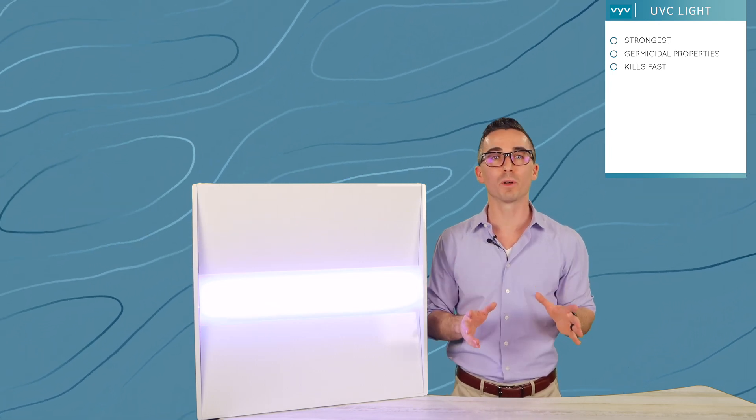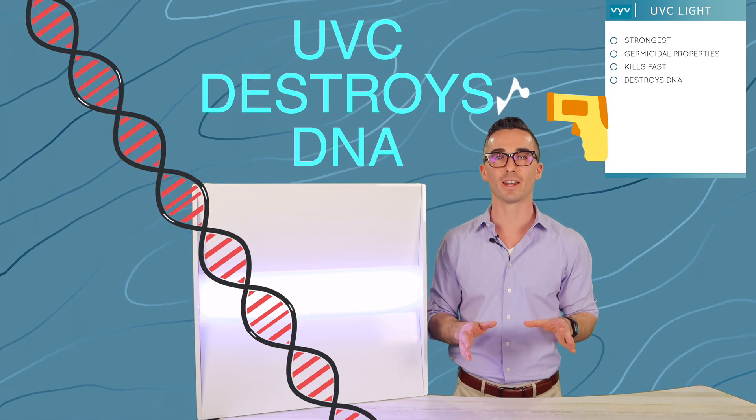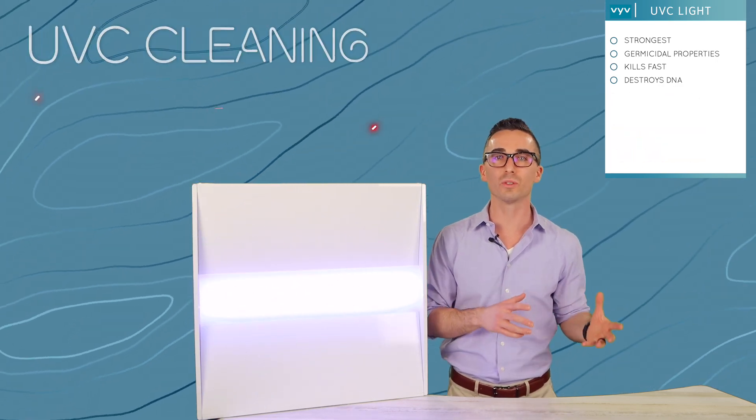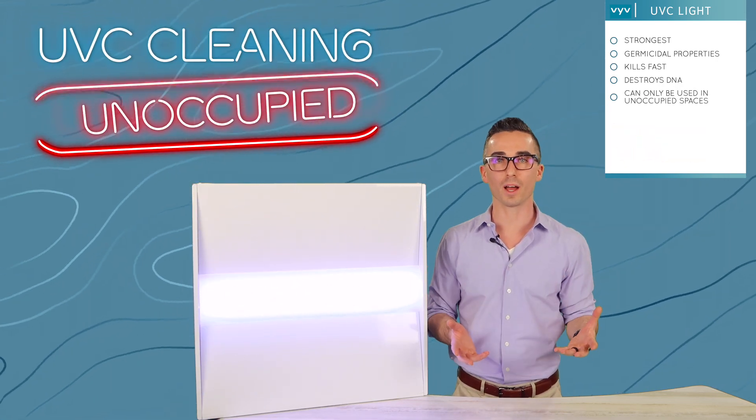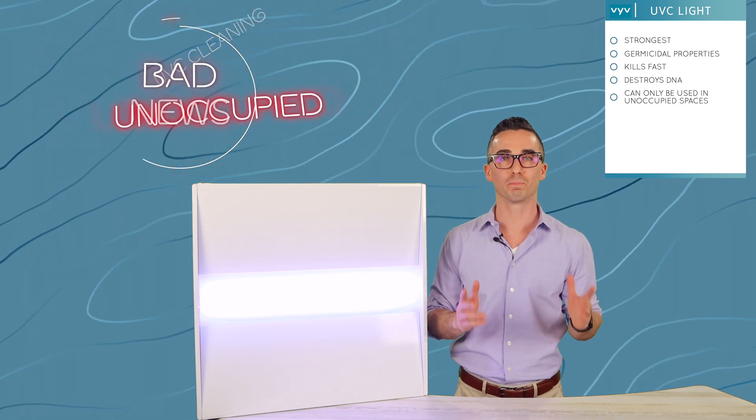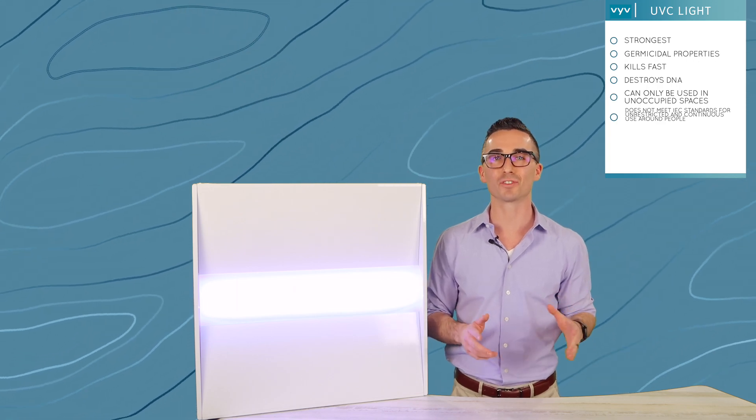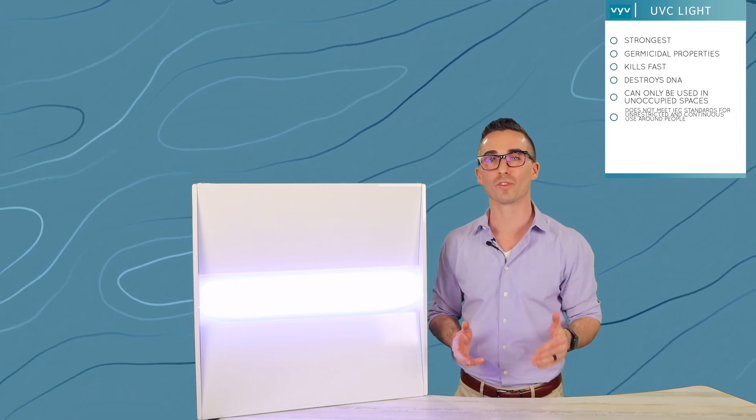But the problem with UV-C is that it destroys DNA. So it kills everything fast but that means the spaces that UV-C light is used need to be unoccupied. You do not want to be hanging out under UV-C light. That's bad news. UV-C light also does not meet IEC standards for unrestricted and continuous use around people.